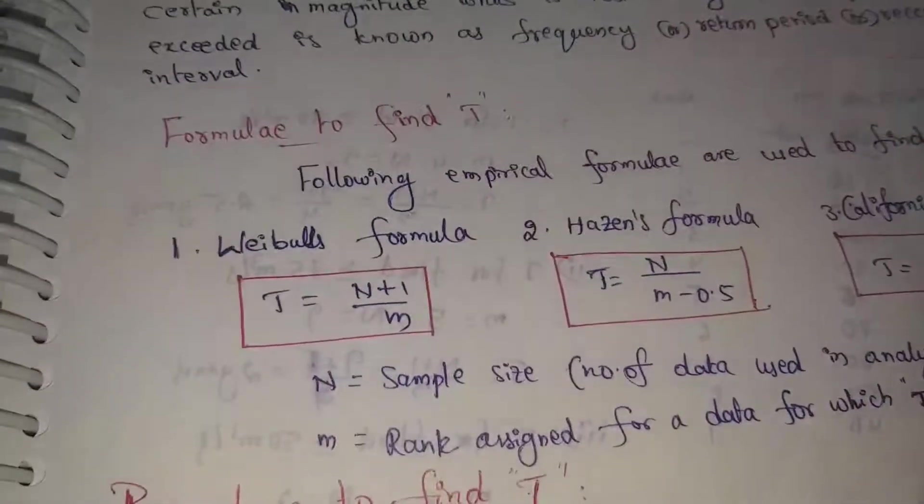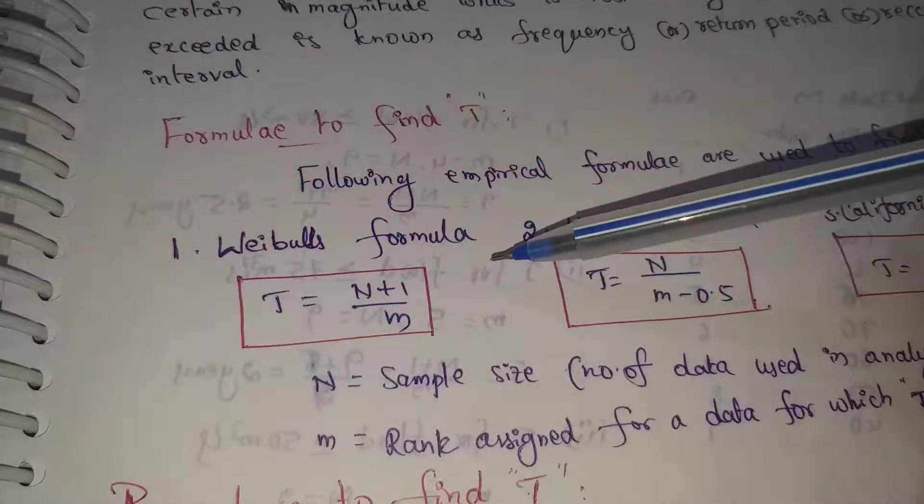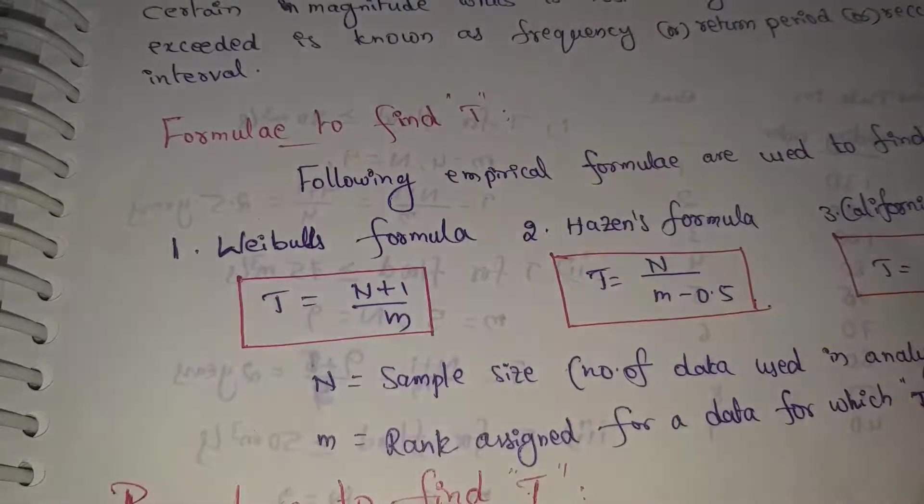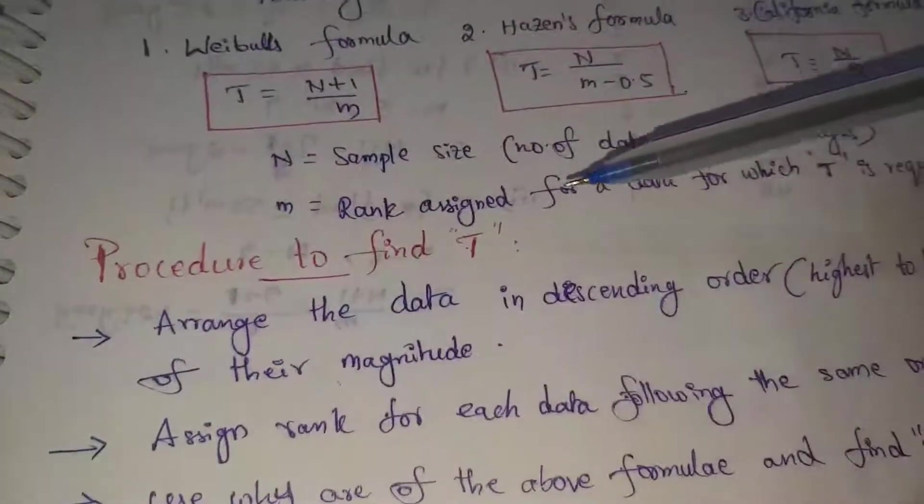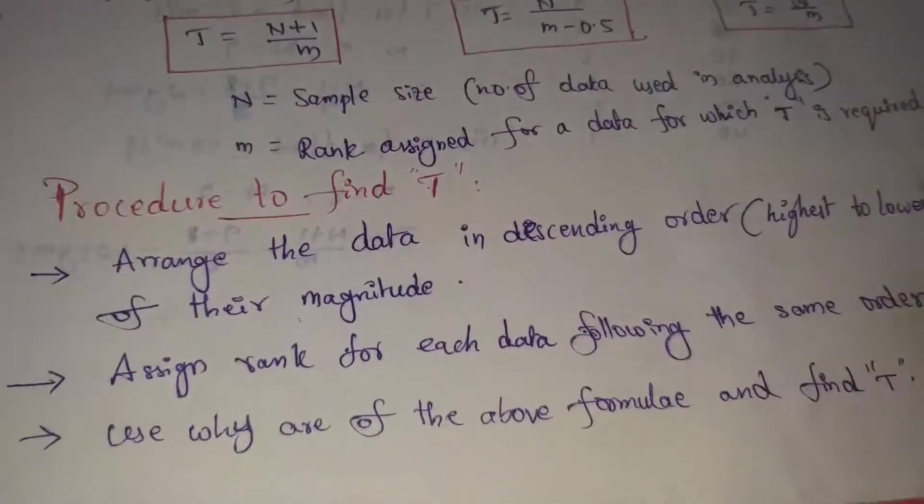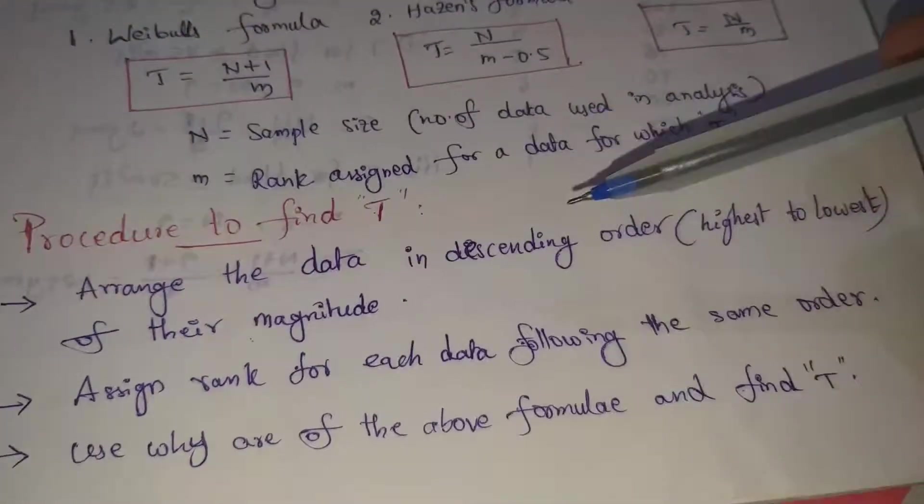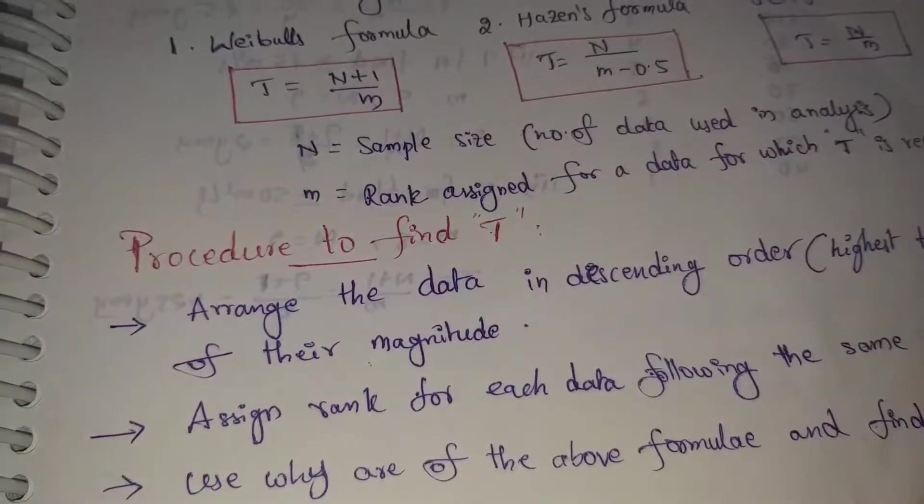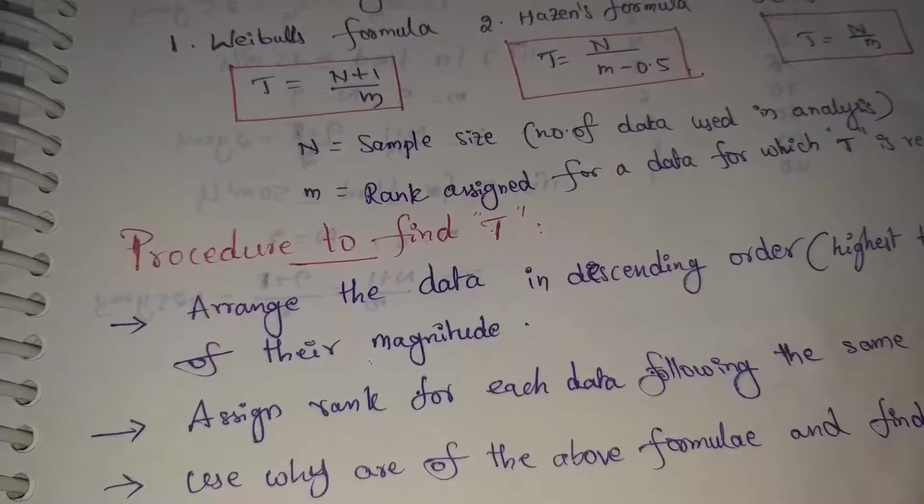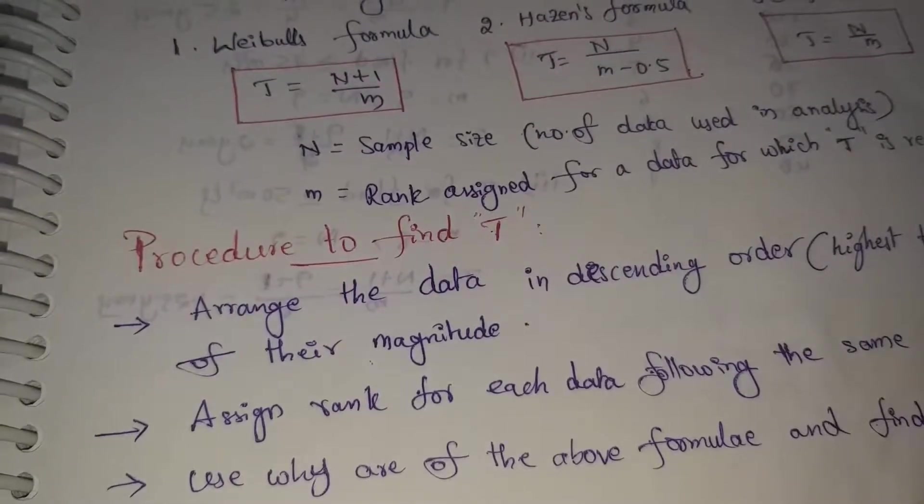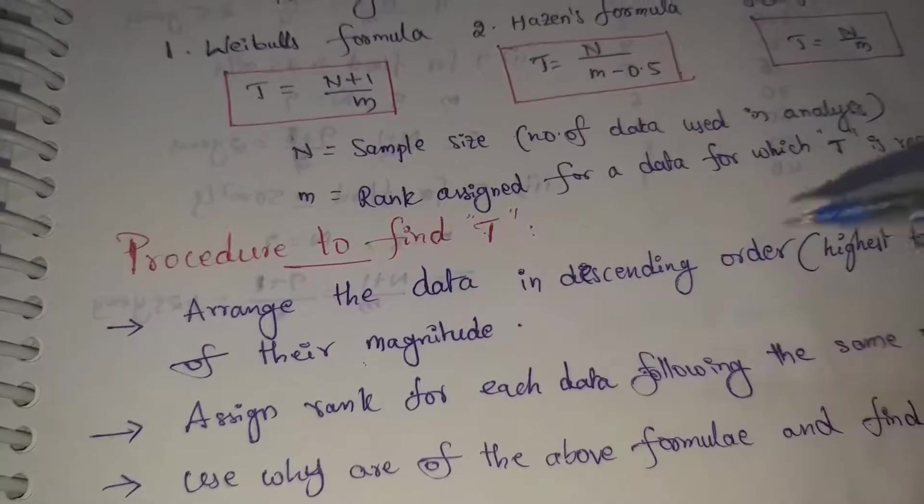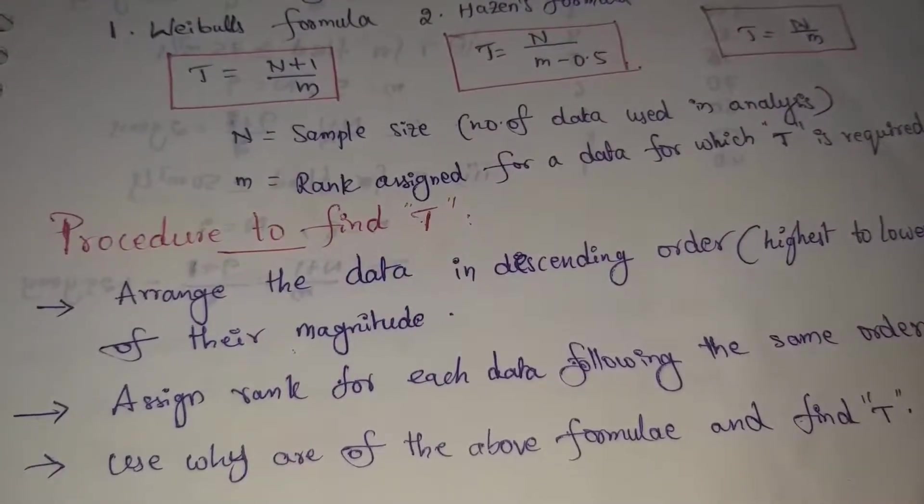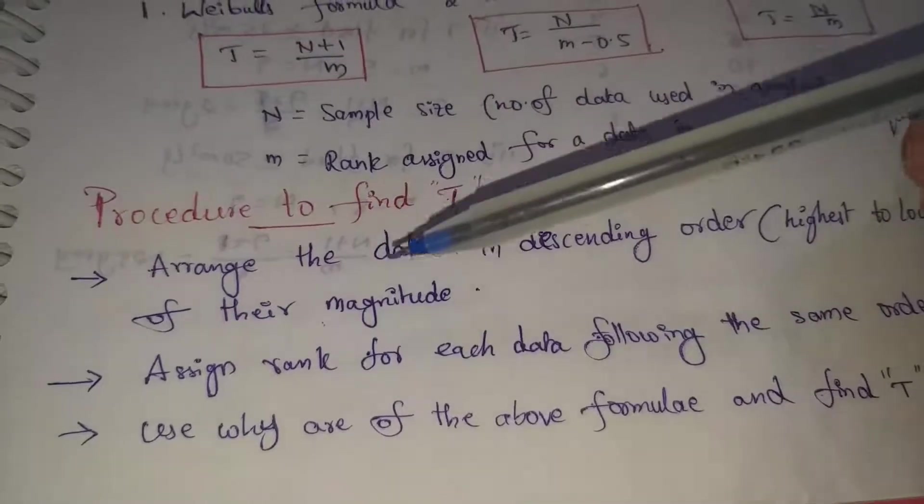There is a procedure to find T. First, arrange the data in descending order - highest to lowest of their magnitude.